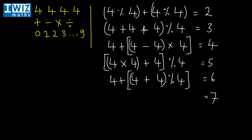To get to seven, we put our four fours down — four, four, four, and four. Seven is just eight minus one. So four plus four gives eight, and four divided by four gives one, and we put a minus sign in: eight minus one equals seven.